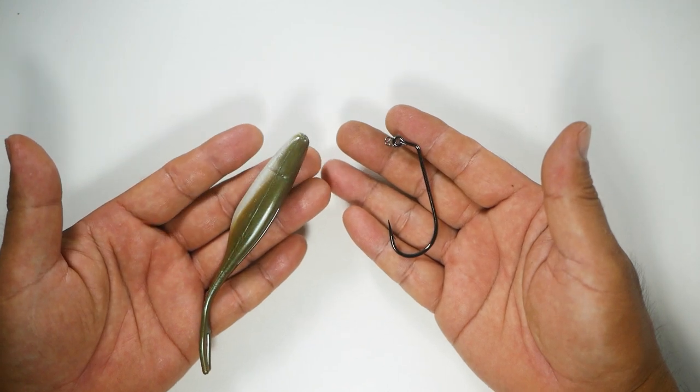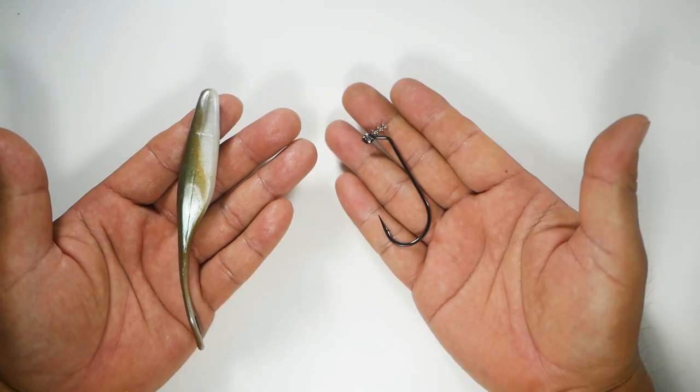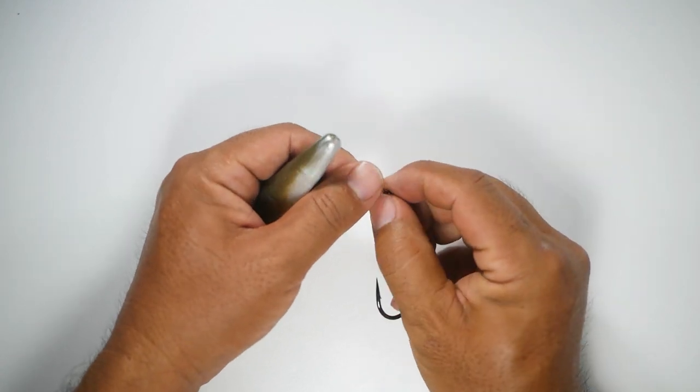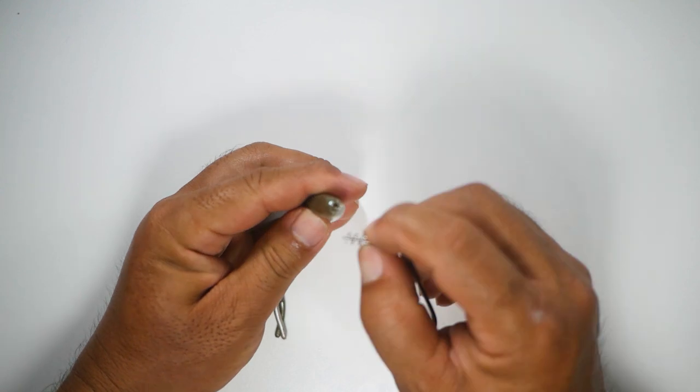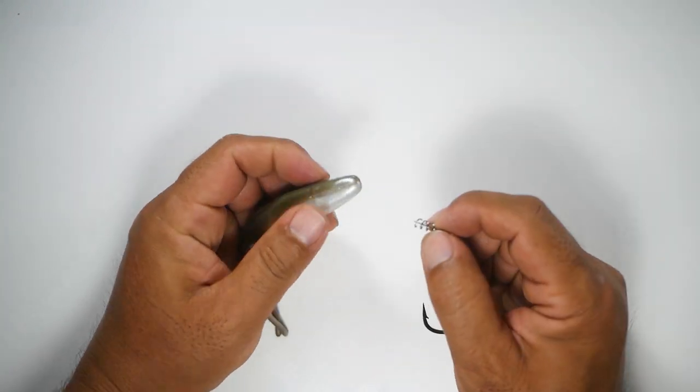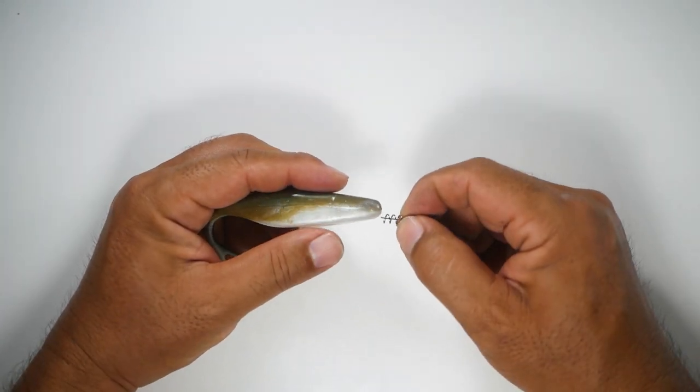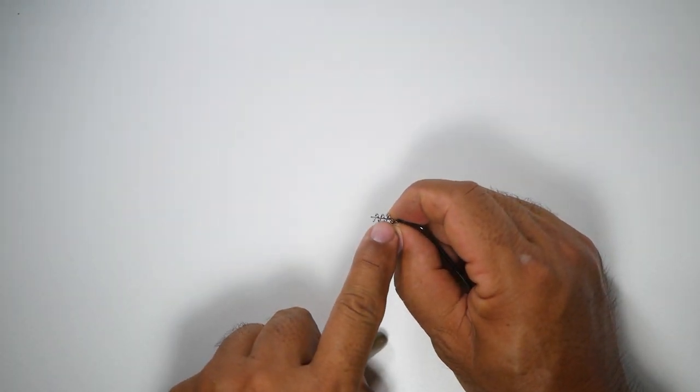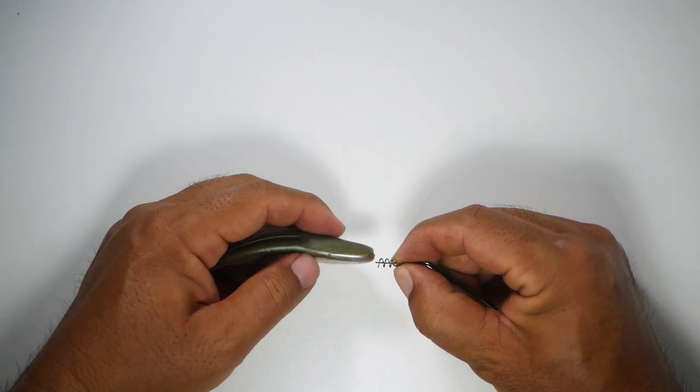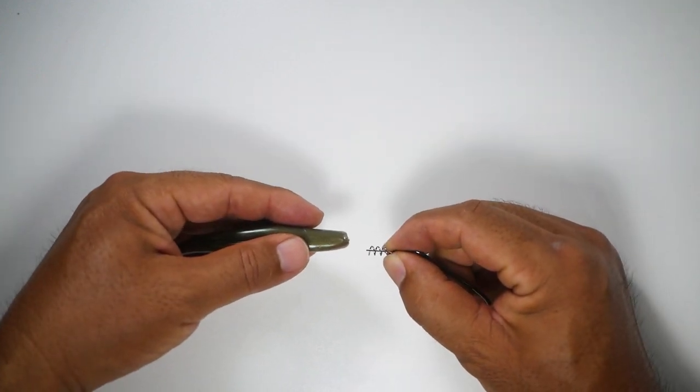Now to attach our soft plastic to our rigging kit. Basically, you want to start by making sure that the centering pin goes to the exact center of the nose. And then as you start twisting the bait onto the corkscrew, if you just keep in mind to keep that centering pin going straight into the bait, you'll know that your bait will be centered when you're completed.